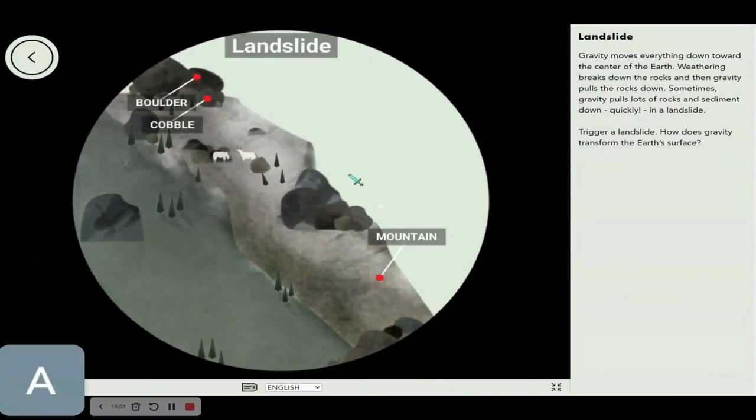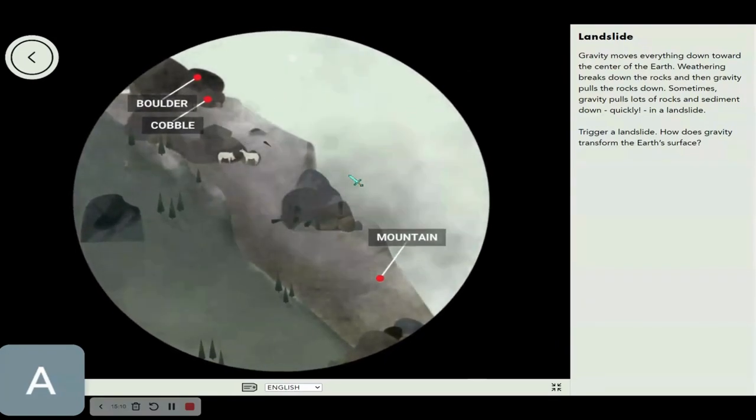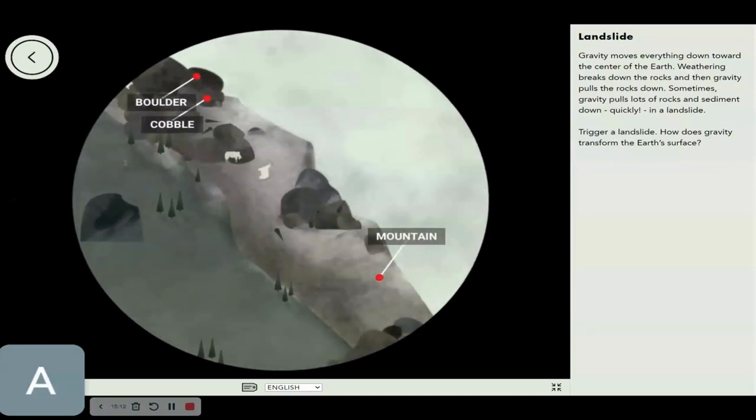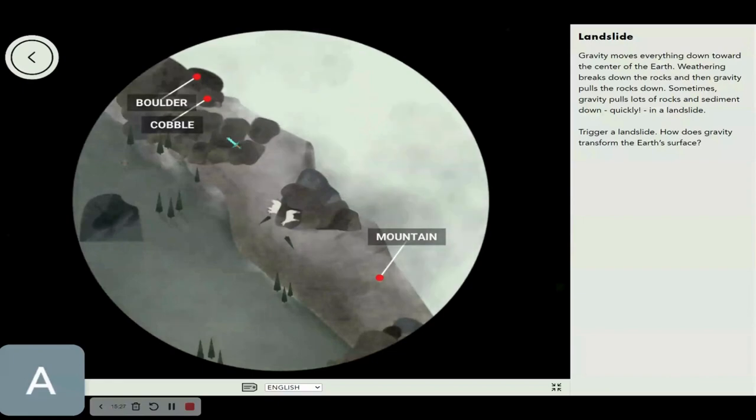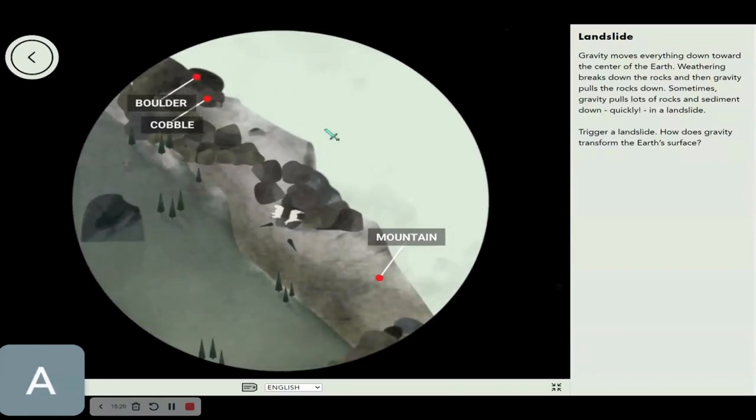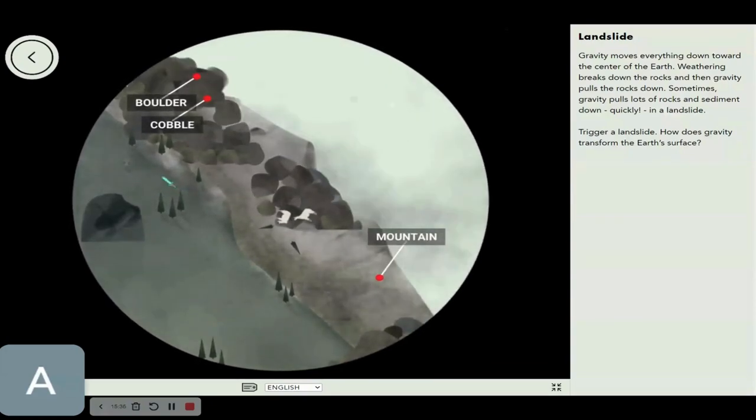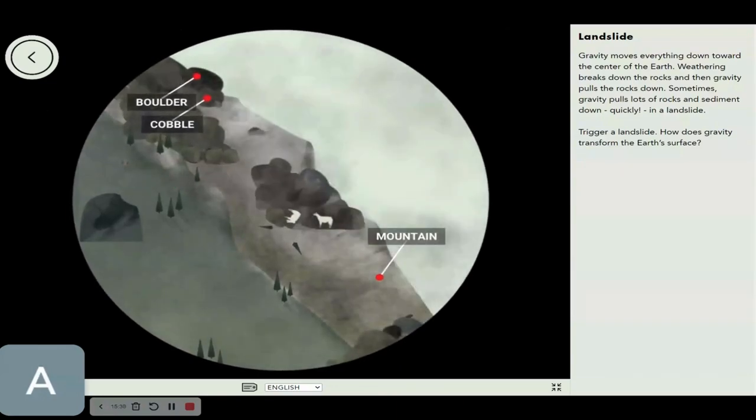A landslide! Gravity moves everything down towards the center of the earth. Weathering breaks down the rocks, and then gravity pulls the rocks down. Sometimes, gravity pulls lots of big rocks and sediment down quickly in a landslide, which is what's happening right here. All these rocks are getting pulled towards the earth very quickly.